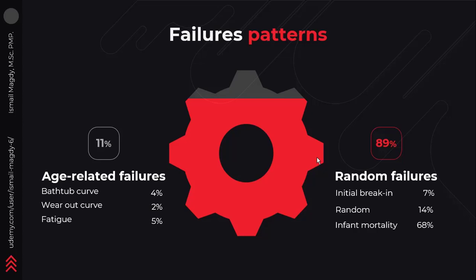This means that having a time-based maintenance strategy alone is not effective, because the majority of failures occur randomly and not based on aging. This leads us to the next level of maintenance, which is predictive maintenance. That's it for our lecture today, and in our next lecture we will start learning about predictive maintenance. See you in the next lecture, thank you.